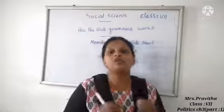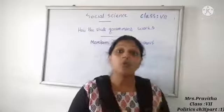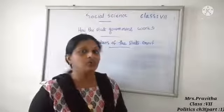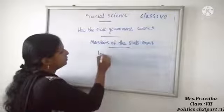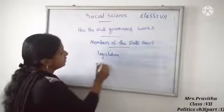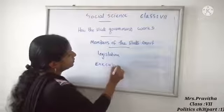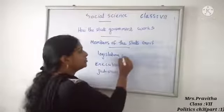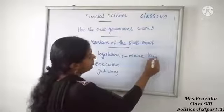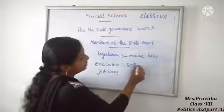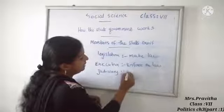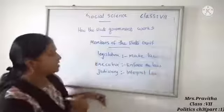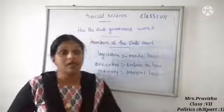Now we are going to study which are the three organs of government. As you already learned in sixth standard, the three organs of government are Legislature, Executive, and Judiciary. Legislature makes the law, Executive enforces the law, and Judiciary interprets the law.